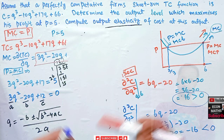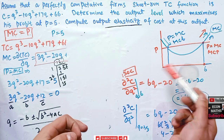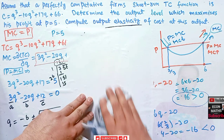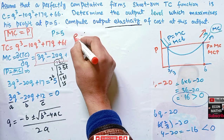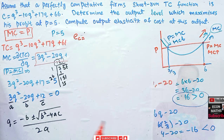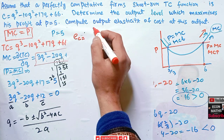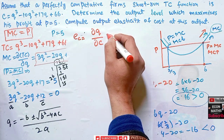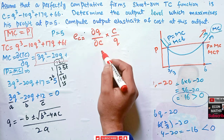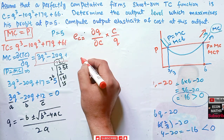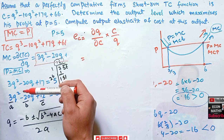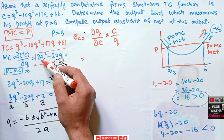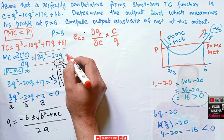Profit is maximized when Q = 6. Now we need to find the output elasticity of cost, denoted EC. Output elasticity of cost is calculated similarly to price elasticity of demand: EC = (DQ/DC) × (C/Q), which means the change in output with respect to change in cost, multiplied by C over Q.